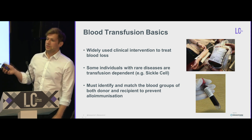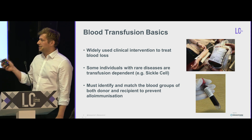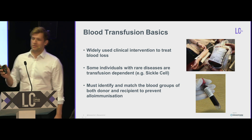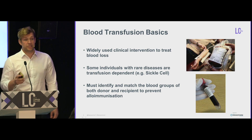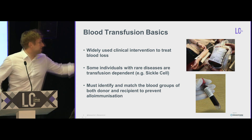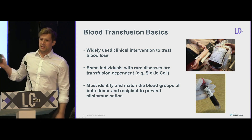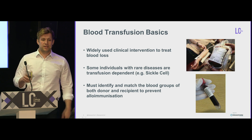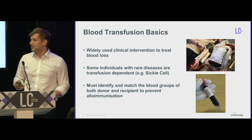To ensure the safety of a blood transfusion, you must identify and match the blood groups of both donor and recipient to prevent alloimmunization. To highlight how serious that is, this blood tube here is 10 mils of blood. If you transfuse this and it's mismatched for ABO, it will kill somebody — it causes a perfect storm in the blood.